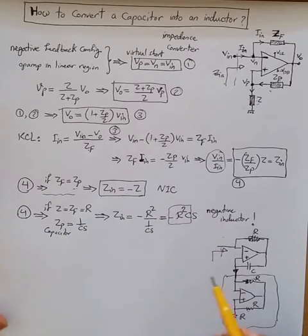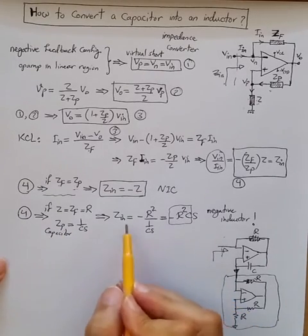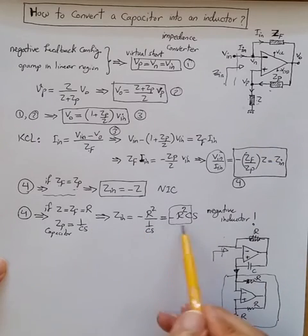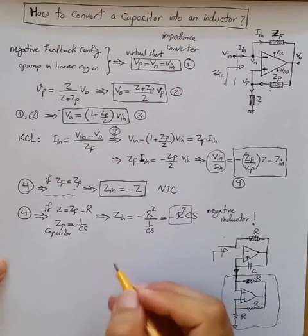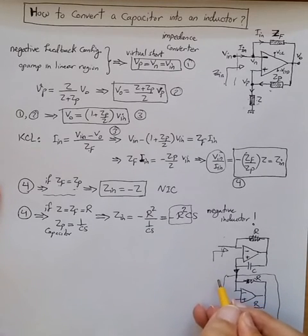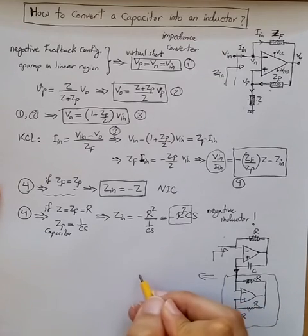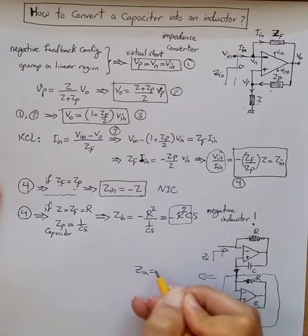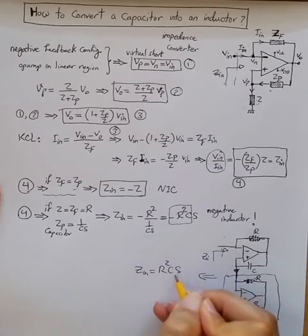Now we know the impedance observed from this point, from this one, is related to Z like the one shown here. So we can just say from this that ZN is this.